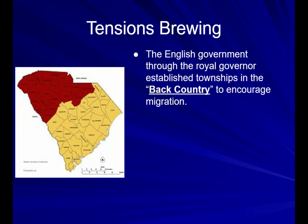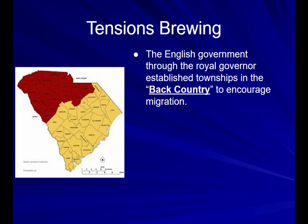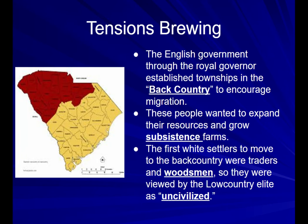Tensions are going to start brewing between the up country or back country and the low country. The English government, through the royal governor, established townships in the back country to encourage migration. These people wanted to expand their resources and grow subsistence farms — farms solely for the sake of feeding their families, not cash crops to trade or sell. The first white settlers who moved to the back country were traders and woodsmen, so they were viewed by the low country elite as uncivilized.